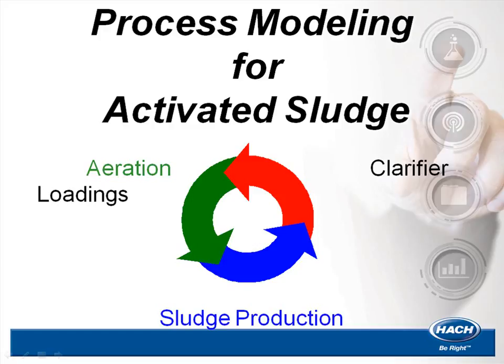HACWIMS modeling allows you to predict the effect on your plant by changing operating variables such as F to M, mixed liquor, and oxygen. WIMS calculates plant-specific coefficients based on your plant's history instead of using textbook values.